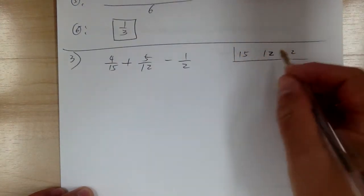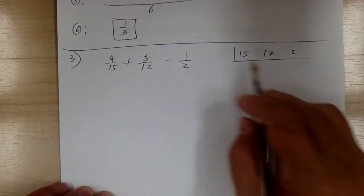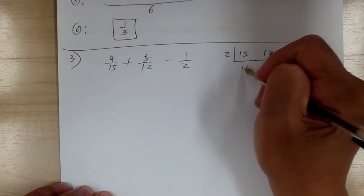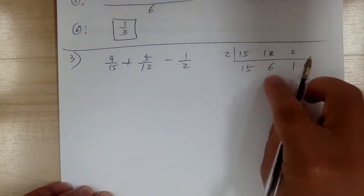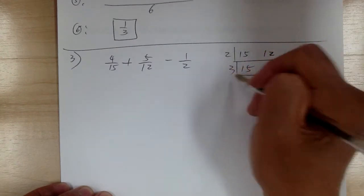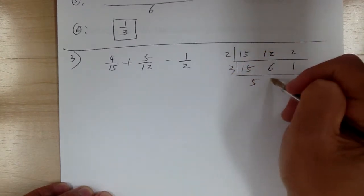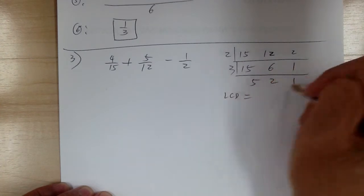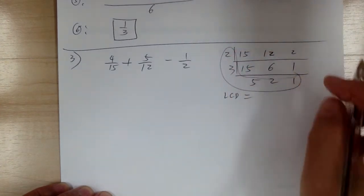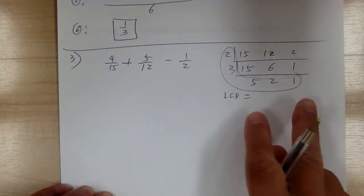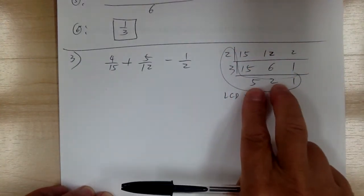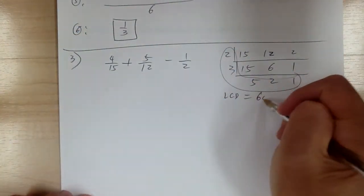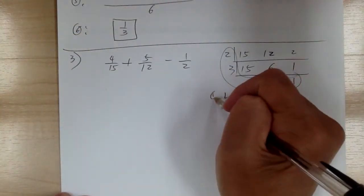As long as two numbers can divide, you can go and divide. Two and twelve divide by two, giving fifteen, six, and one. Fifteen and six are both divisible by three, giving five and two. So your LCD is everything multiplied together: two times five is ten, and six times ten gives you sixty.